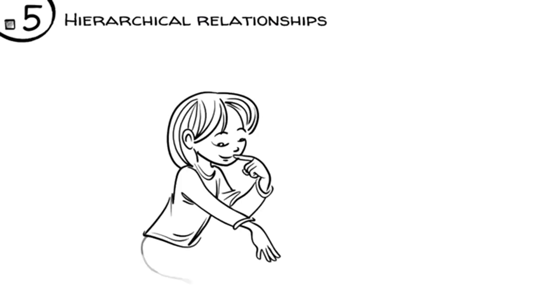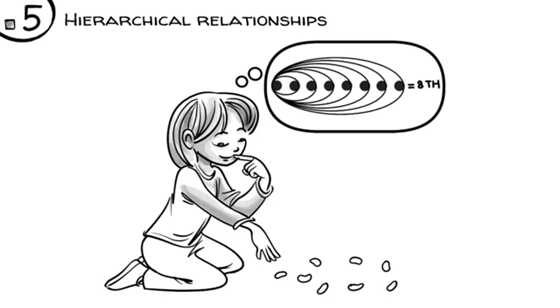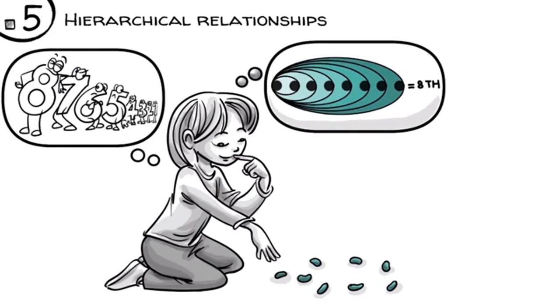As children construct order, they count the objects as follows: one, two, three, four, five, six, seven, and eight. As they do that, the number eight represents the eighth place in the order. In other words, eight always includes one, two, three, four, five, six, seven. The idea of eight is therefore a hierarchical relationship between the eighth object and all those preceding it.